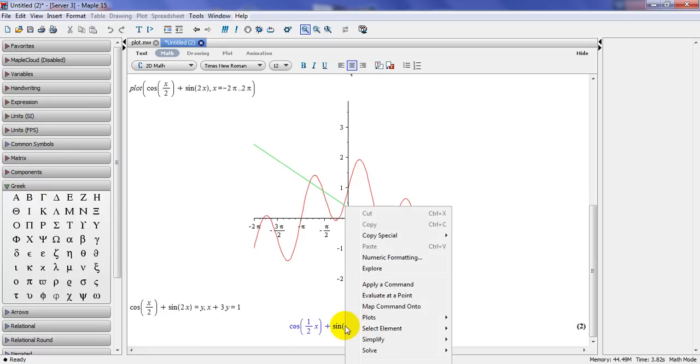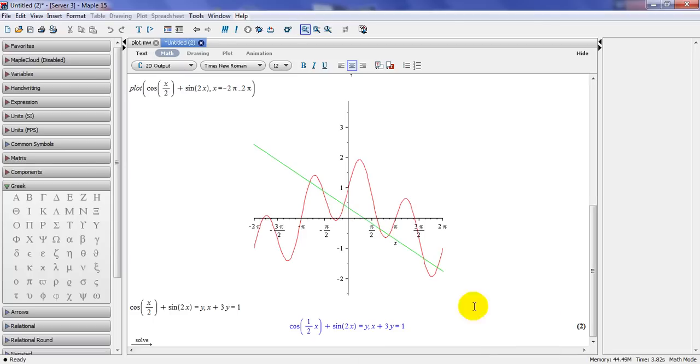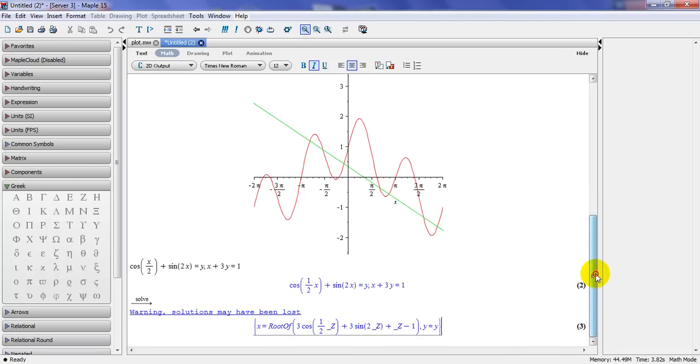So if I want to solve that, right-click and you go to symbol solve and solve here. And if you do that, the answer, you can see it says warning solution may have been lost. And it's not what you get.